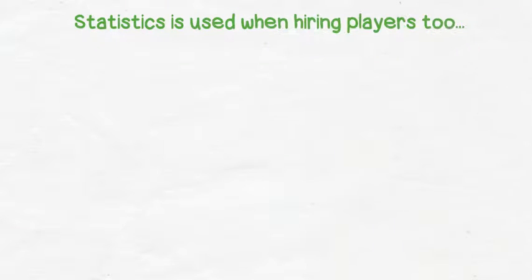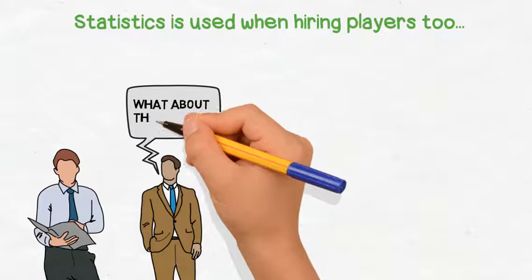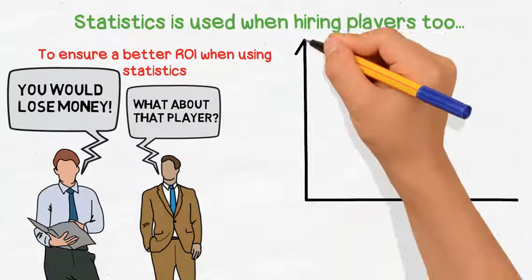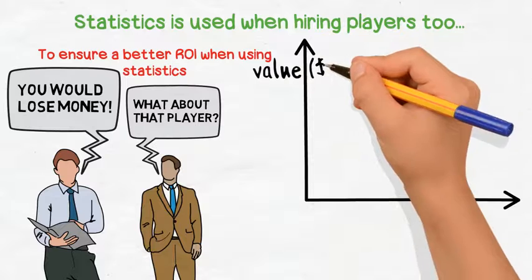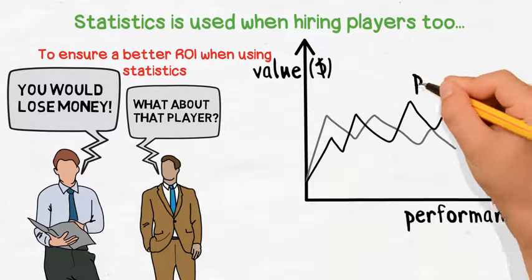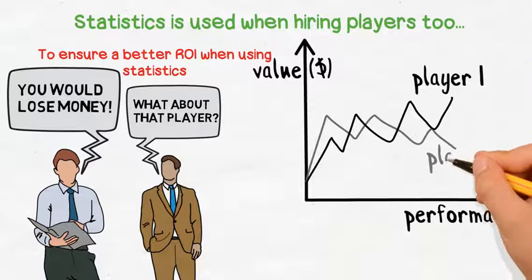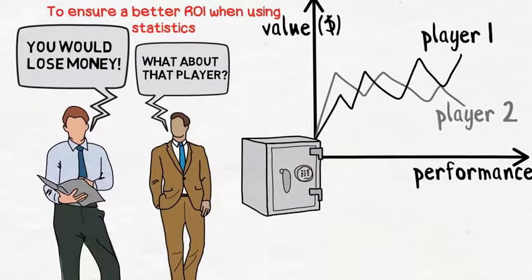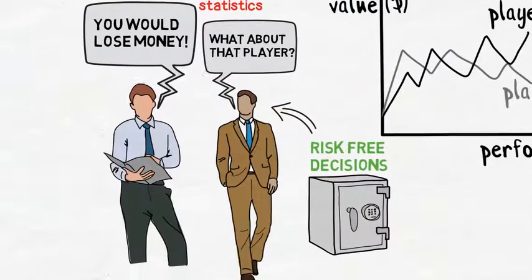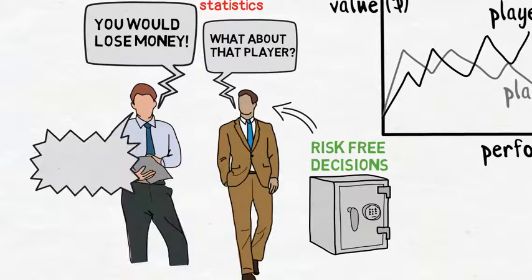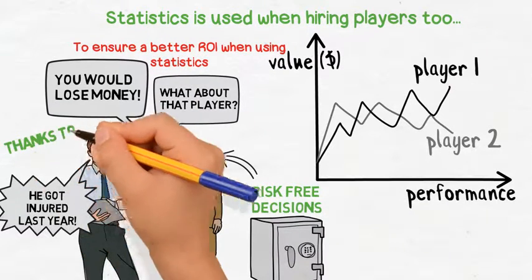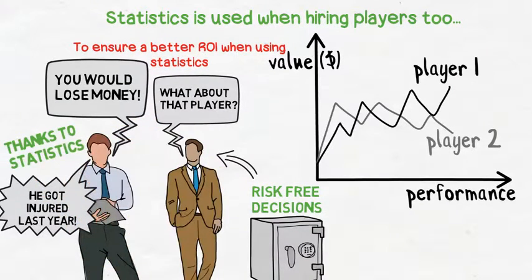Statistics in soccer is also a very important tool when hiring players for the team to ensure a better return on the investment, or ROI, for the team management. Statistics is a useful tool when buying a prospective player in order to avoid overvalued ones who are not at their peak performances. Moreover, statistics can help prevent the purchase of underperforming players. Since soccer is a multi-million dollar game, it's important to make decisions as risk-free as possible and be accurate about the return on investments. Therefore, investing in a player who has a high probability of muscle injury is not a smart decision.